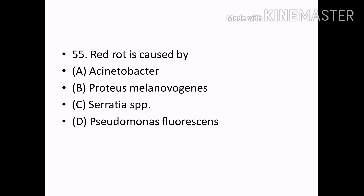Red rot is caused by: Options — Acinetobacter, Proteus, Serratia, Pseudomonas fluorescence. Correct answer: Option C — Serratia.